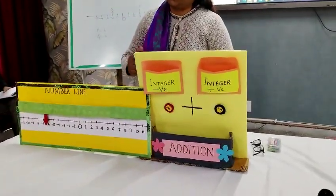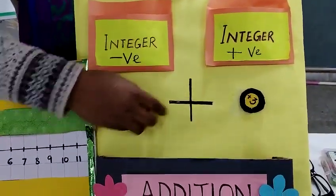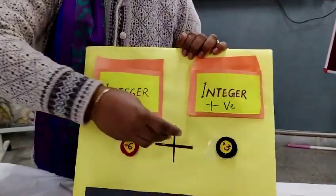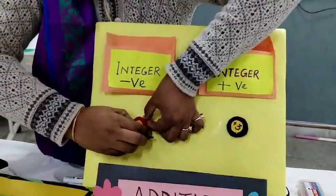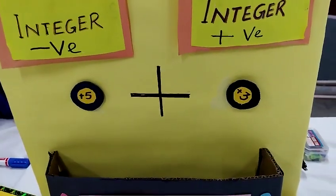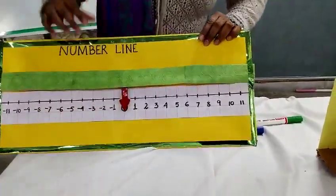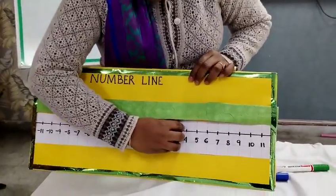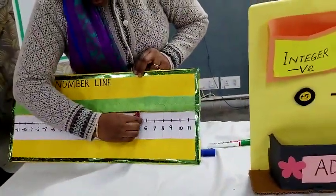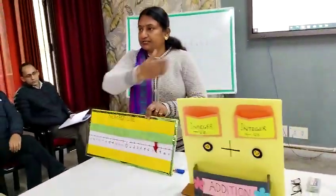Now let us come to today's topic: addition of integers. First, let me add two positive integers. I take out plus 5 and plus 3. Positive means you need to move to the right side — the increasing direction. Start from 0, go to 3, then make 5 more jumps to the right: 1, 2, 3, 4, 5 — and you end up with 8. For positive numbers, we move to the right.